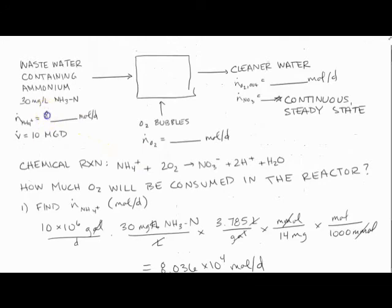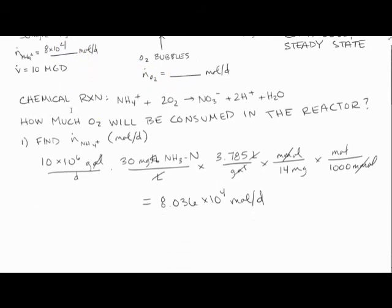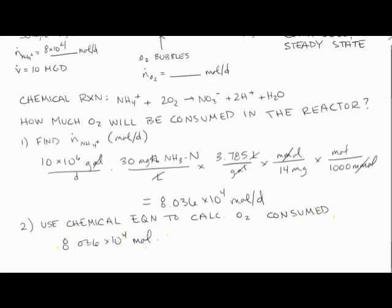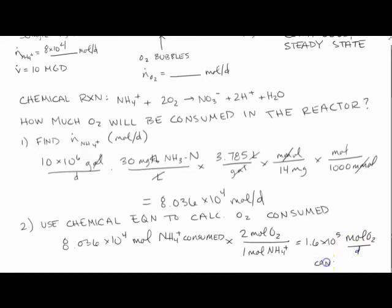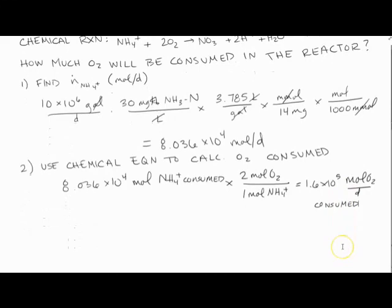Then what I can do is go up and look at that chemical reaction and see that for every mole of NH4 plus, I need 2 moles of oxygen to react. So really, all I need to do is multiply that 8.036 times 10 to the 4 moles per day by 2, and I can get the moles per day of oxygen that I would need. This is a relatively quick example, but it gives you an idea of how to apply the ideas that we've talked about to a mass balance problem.